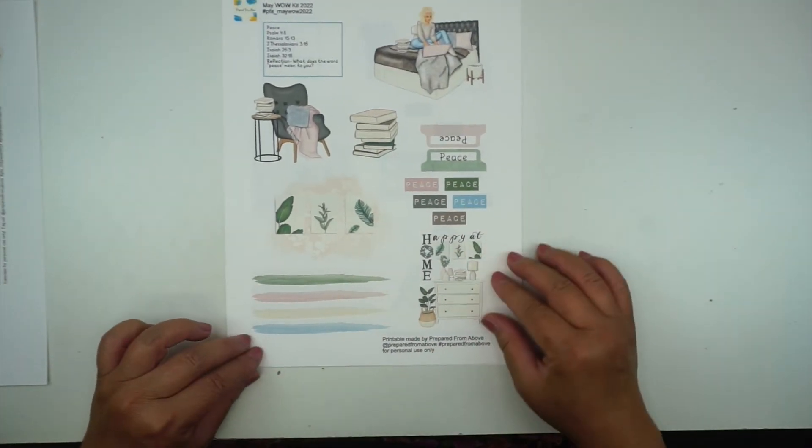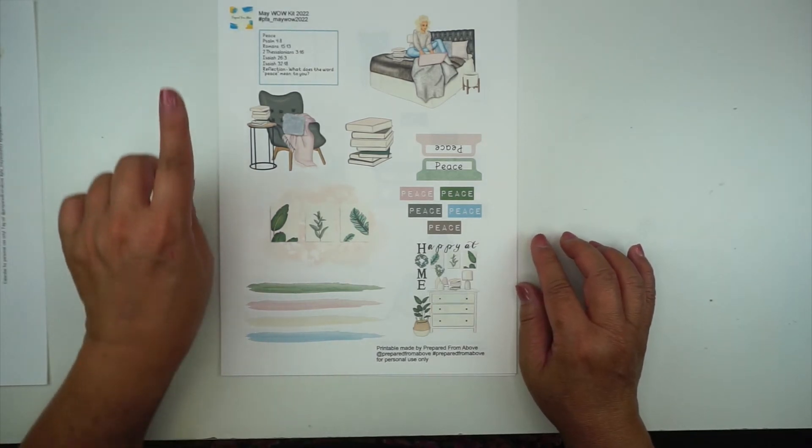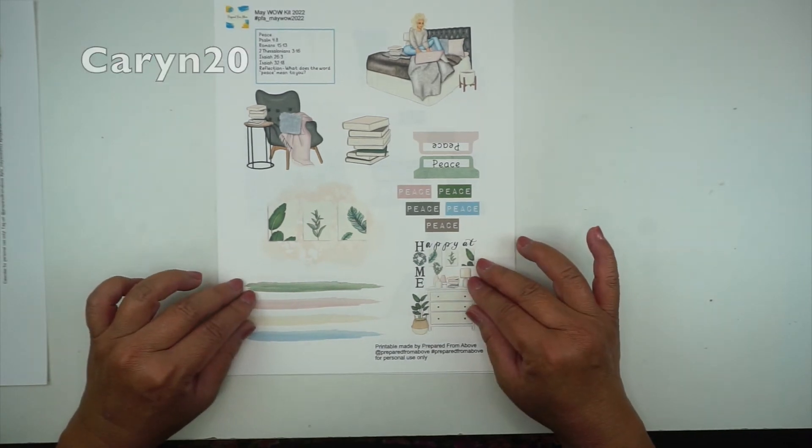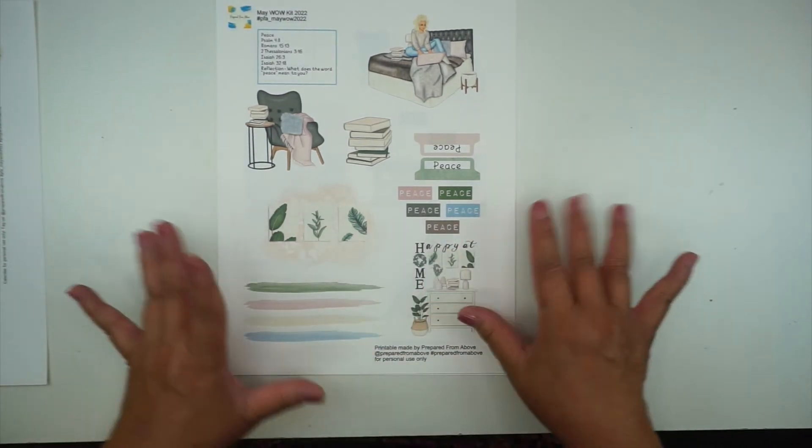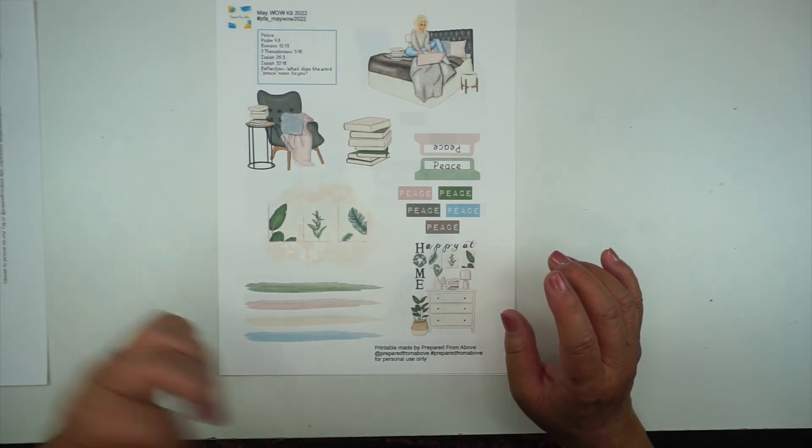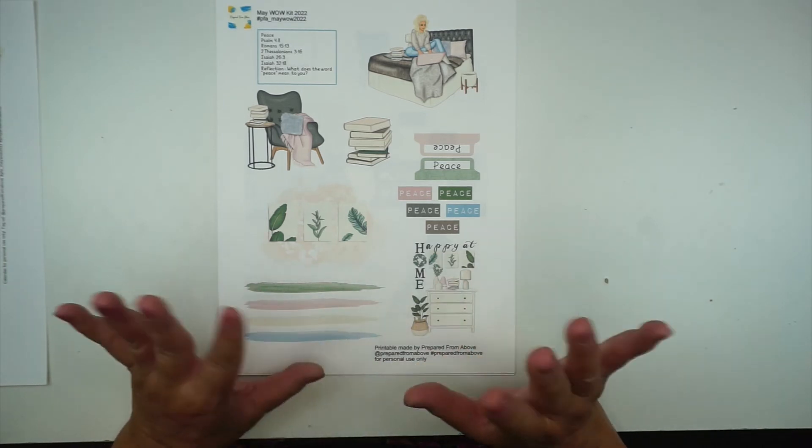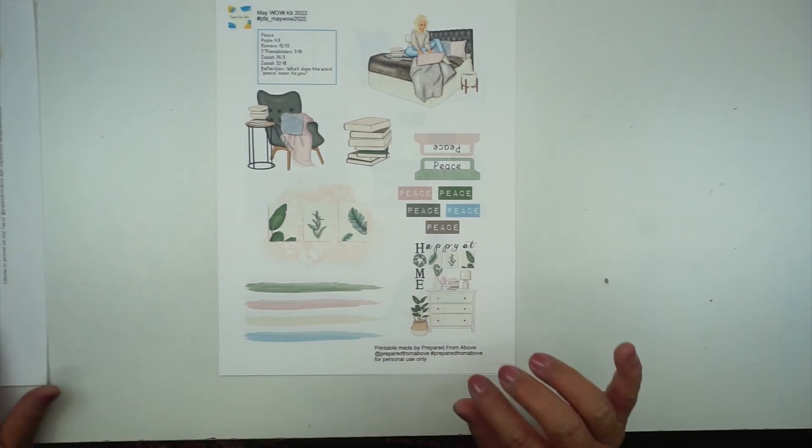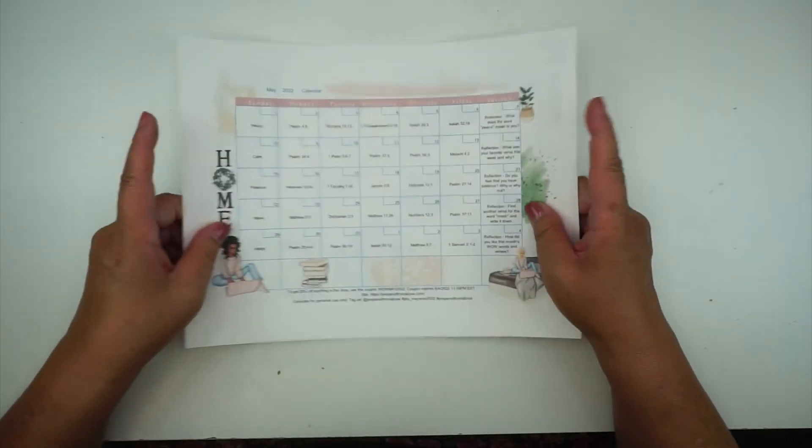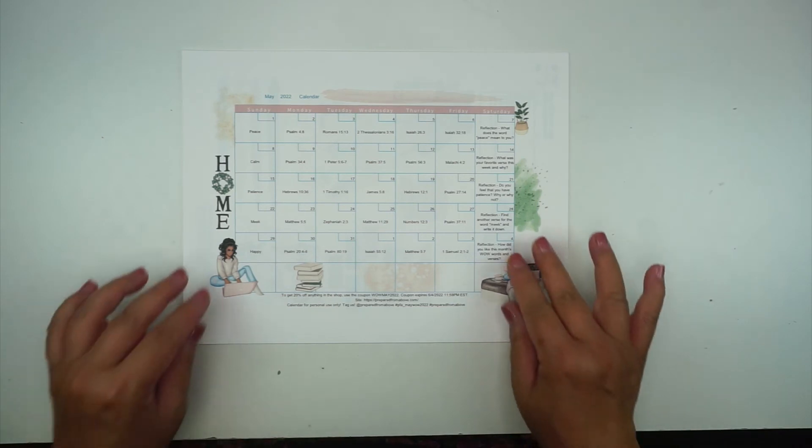And like I said, I will link the website down below for Prepared from Above. And if you use coupon code karen20, I'll put it up here for you, but if you use that coupon code you can get 20% off of not only this kit but everything that's listed in the shop. So again, I will put my coupon code down below and the link to the website as well. So if you want to shop then just use that coupon code. And then like I said, this calendar is a freebie on the website.